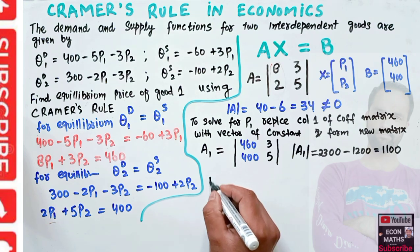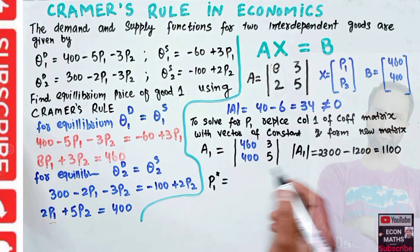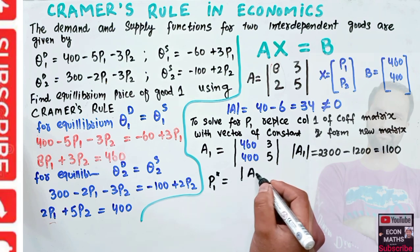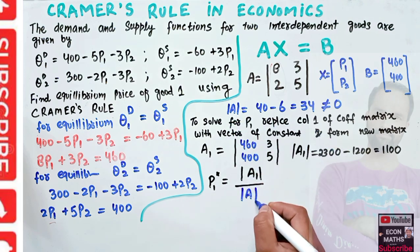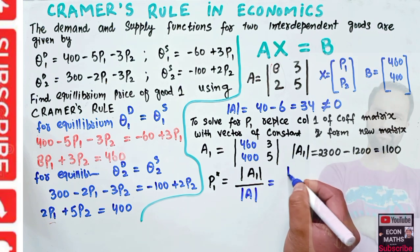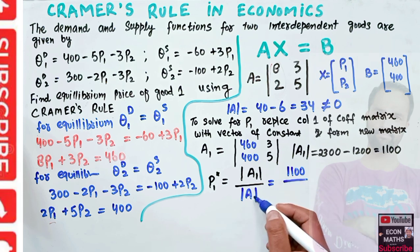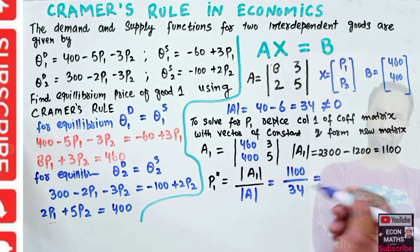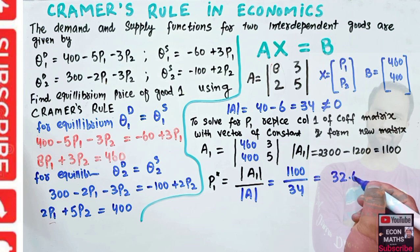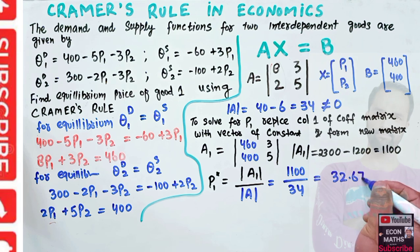The equilibrium price P1 is equal to the determinant of the new matrix A1 divided by the determinant of the coefficient matrix A: P1 = det(A1) / det(A) = 1100 / 34 ≈ 32.67.